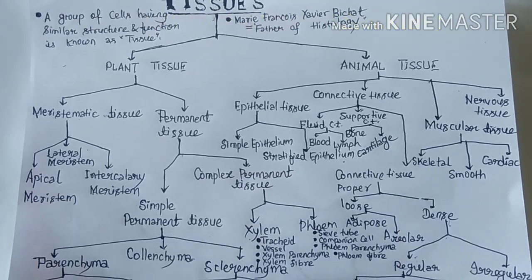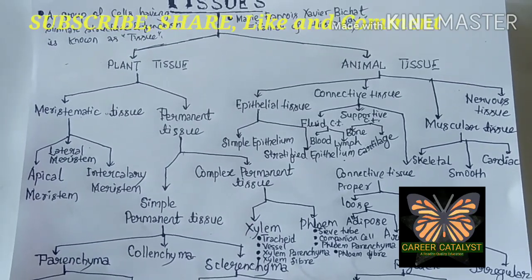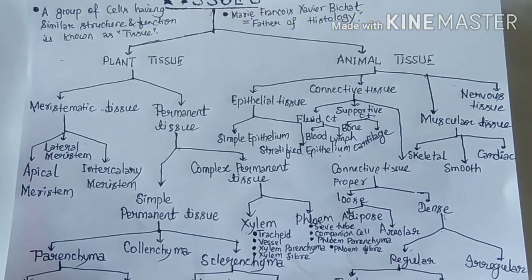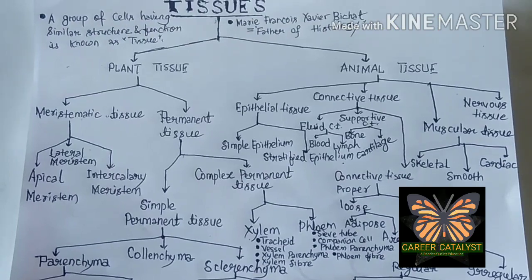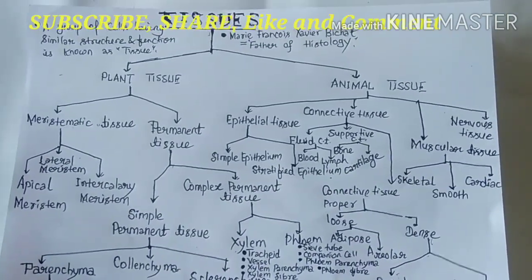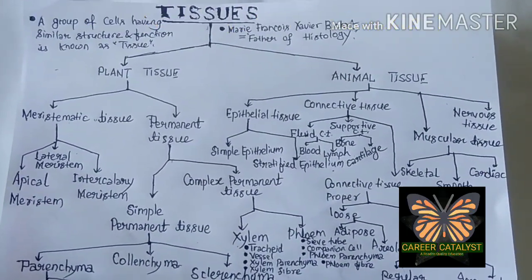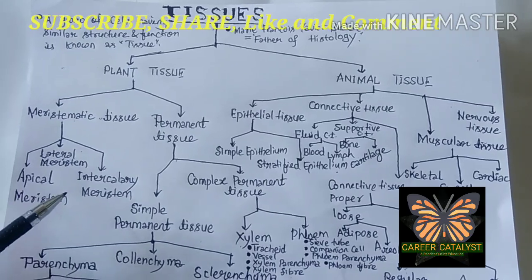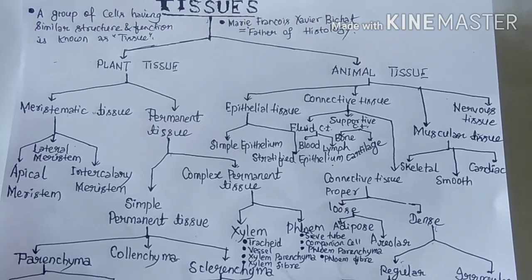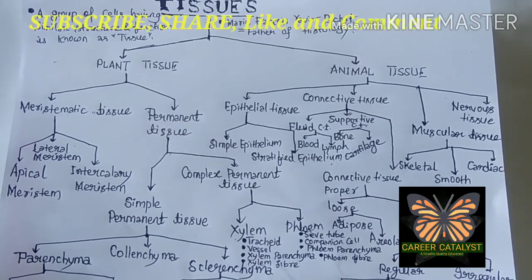Meristematic tissues are not present in a plant body for a lifetime. This meristematic tissue is present during the young stage of a plant. Later on, this meristematic tissue develops into a permanent tissue.